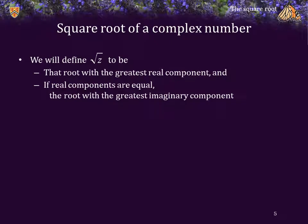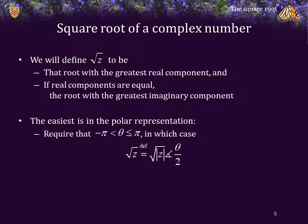We will define the principal square root to be that root that has the greatest real component, and if the real components are equal, the root with the greatest imaginary component. This is easier if you just consider the polar representation. In writing z, if we require that theta is greater than negative pi and less than or equal to pi, then we can define the principal square root of z as the square root of the magnitude of z, phase theta over 2.